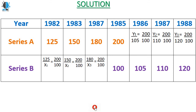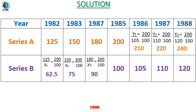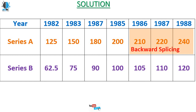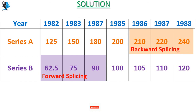Substituting into the tabulation: for series B, the values are — 1982: 62.5, 1983: 75, 1987: 90. For series A, the values are — 1986: 210, 1987: 220, 1988: 240. The extension of series A into 1986, 1987, and 1988 is called backward splicing, while the extension of series B back to 1982, 1983, and 1987 is called forward splicing.